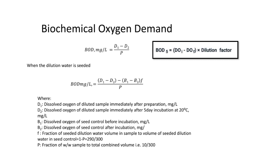The first one is biochemical oxygen demand. The unit of BOD is milligram per liter, or we can say PPM (parts per million). The formula is BOD = (D1 minus D2) divided by P, where D1 is the dissolved oxygen initial, D2 is dissolved oxygen final, and P is the volume of sample divided by total volume.